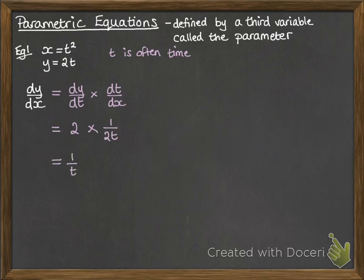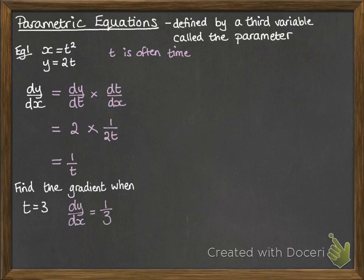So dy by dx is equal to 1 over t. Now we might be asked to find, for example, the gradient at a particular point. So this one, when t equals 3, what would the gradient be? So you can just put it into that formula, 1 over t, so dy by dx is a third when t equals 3.